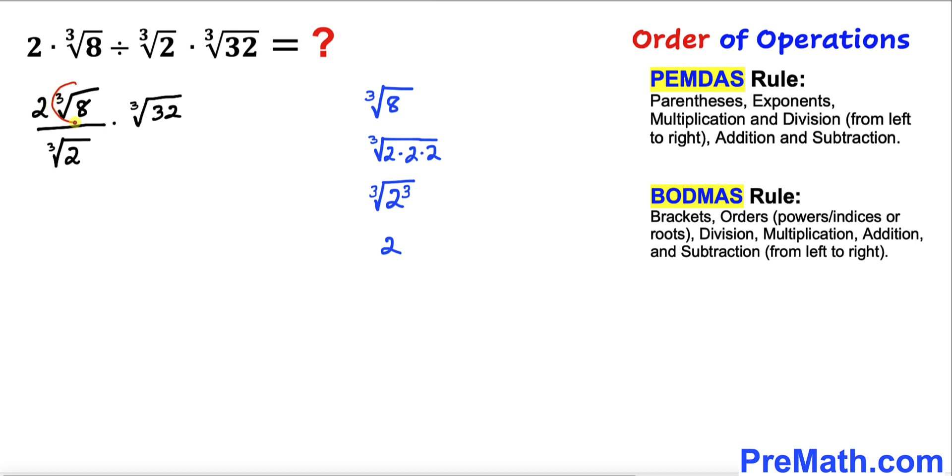So therefore I am going to replace this part by simply 2, and here I have replaced this one by 2 as you can see. And now this 2 times 2 is 4.